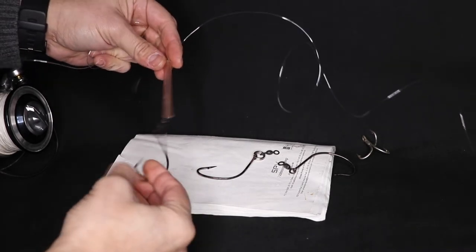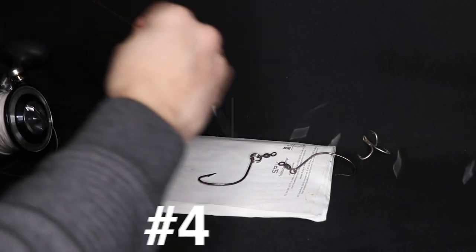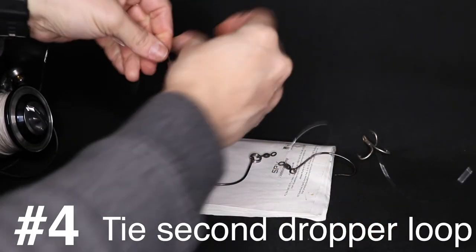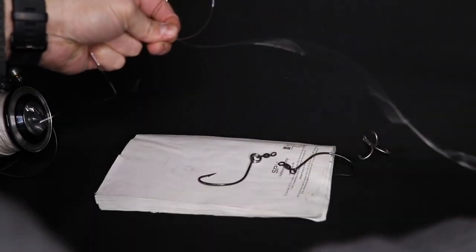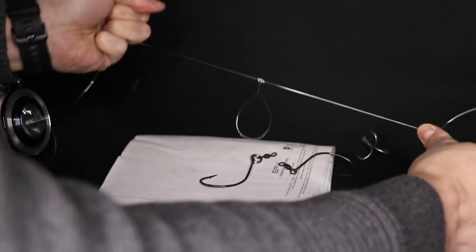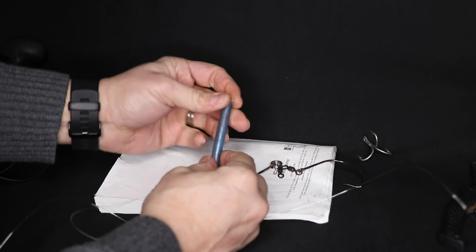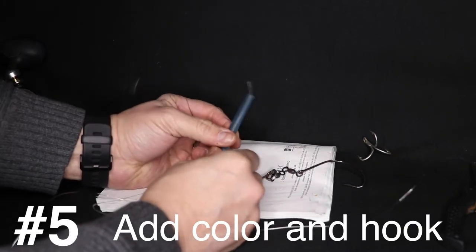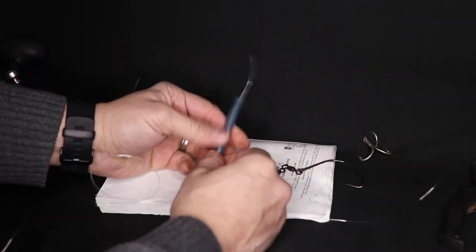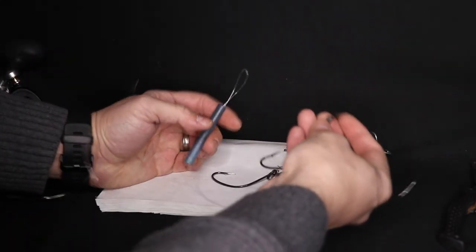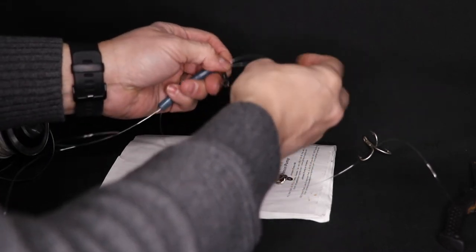Go from the main swivel. Gave myself about two feet to the first dropper loop. I'm going to give myself another two feet and then I'm going to tie another dropper loop. Use your teeth. Second dropper loop. Again, push it through. Give you plenty of room. Loop through the eye of the barrel swivel.